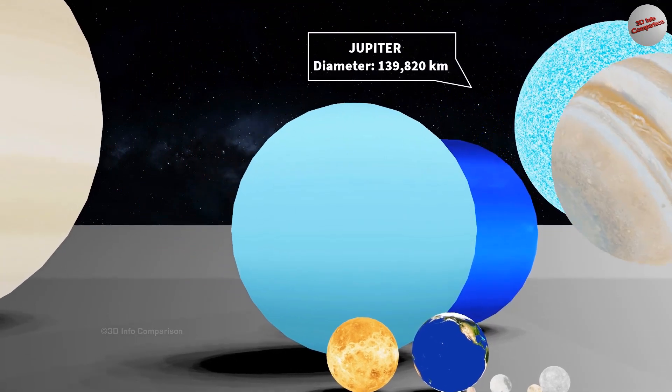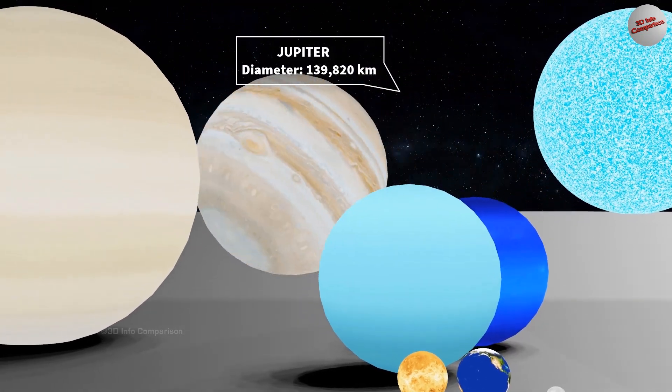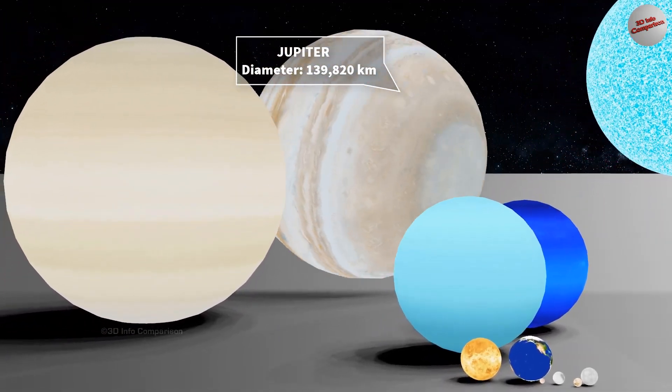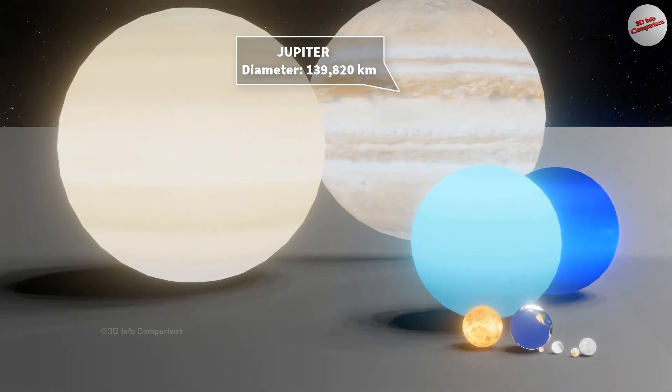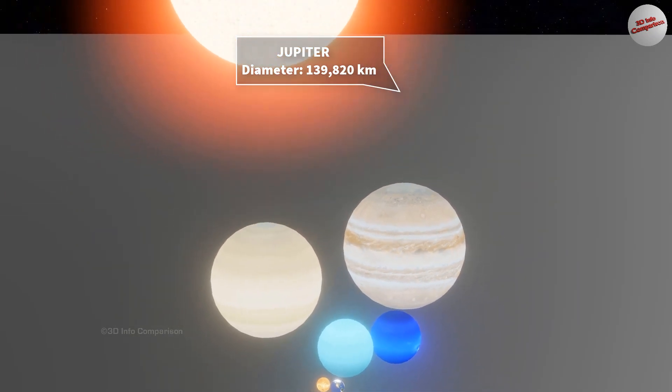Jupiter is the largest planet in our solar system and the fifth planet from the Sun. It has an equatorial diameter of approximately 143,000 kilometers. To put it in perspective, you could fit over 1,300 Earths lined up side by side across the diameter of Jupiter.